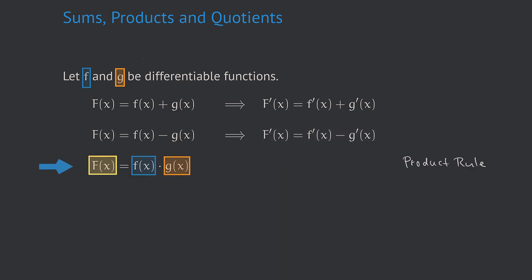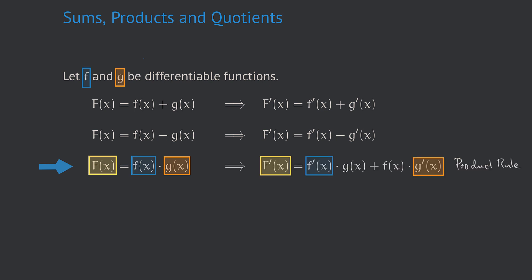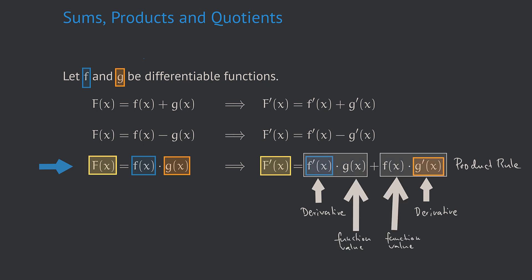Next we want to discuss the more interesting situation when capital F is given as the product of f and g. The rule for determining the derivative of capital F is called the product rule. The product rule is built upon the derivatives of f and g, which are multiplied by the function value of the respective other function, and these expressions are summed up. So the derivative of the product of f and g at x is given by f'(x) times g(x) plus f(x) times g'(x).